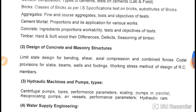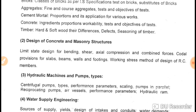Next is cement mortar. Note there is a typo in the syllabus — it says 'mortal' but it means mortar. Cement mortar is a mixture of cement and sand. There are different types of mortar with different applications, advantages, and disadvantages. Next is concrete — a mixture of cement, fine aggregate, and coarse aggregate with the required quantity of water, widely used for any structure.